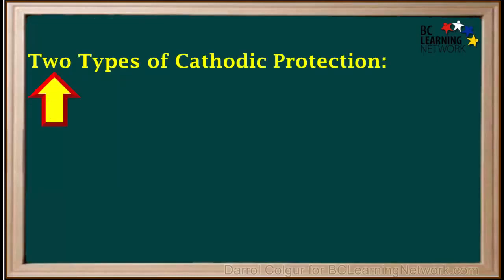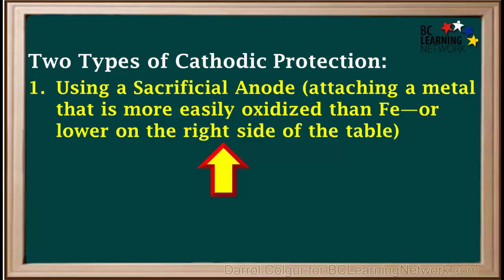So we can summarize by saying there are two main types of cathodic protection. The first method is accomplished using a sacrificial anode, that is attaching a metal that is more easily oxidized than iron, or lower on the right side of the table.